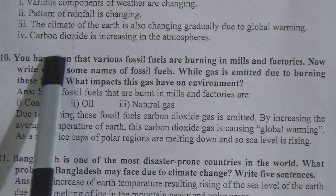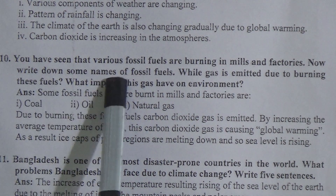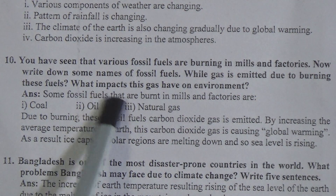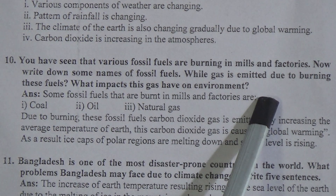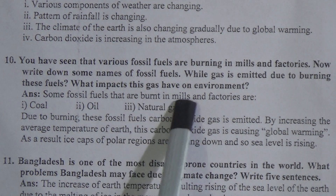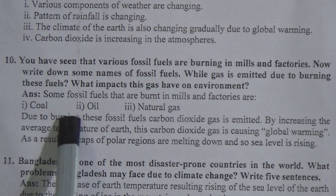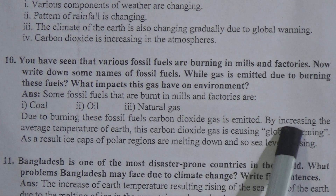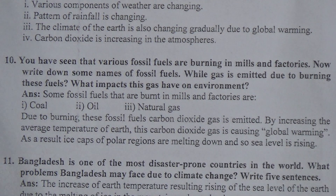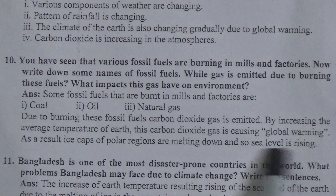You have seen that various fossil fuels are burning in mills and factories. Write down some names of fossil fuels, what gas is emitted due to burning these fuels, and what impacts this gas has on the environment. Some fossil fuels burned in mills and factories are coal, oil, and natural gas. Due to burning these fossil fuels, carbon dioxide gas is emitted. By increasing the average temperature of Earth, this carbon dioxide gas is causing global warming. As a result, ice caps of the polar region are melting down and sea level is rising.